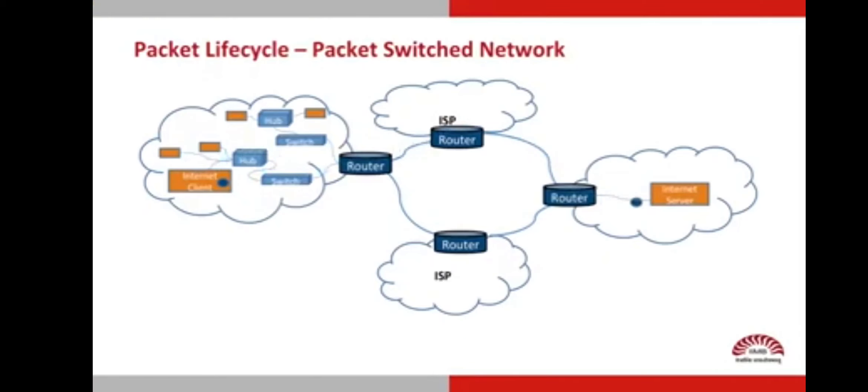A packet moves from one network to another. A packet will originate in a client on one network, go through hubs and switches, then through the router onto the internet, and then to the destination network's router, through the switches and hubs to the destination internet server. The local networks could be in different parts of the world, in different countries. Once all the packets have reached the destination server or client, it may respond by sending its own packets that will then return to the origin server or client.